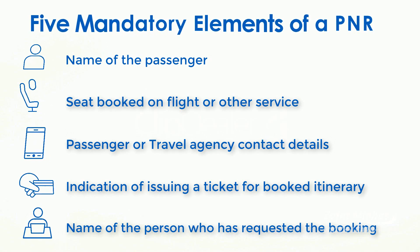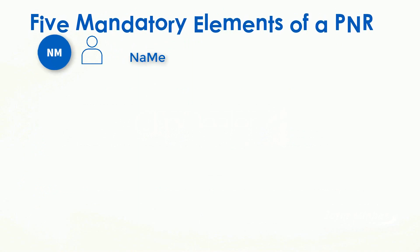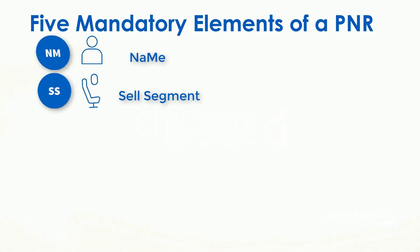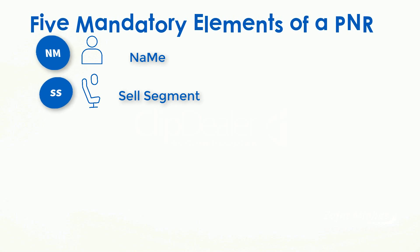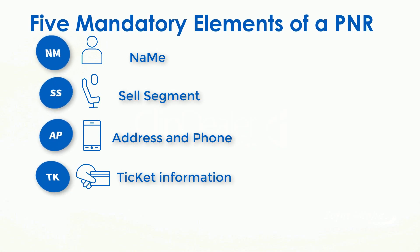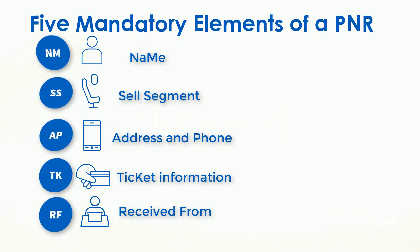These elements can be entered in any order. The NM transaction is used to enter the passenger name. The SS transaction is used to sell a segment to book a seat or other services. The AP transaction is used to enter passenger or travel agency contact details. The TK transaction is used to enter ticket information, and the RF transaction is used to enter information on who has requested the booking.